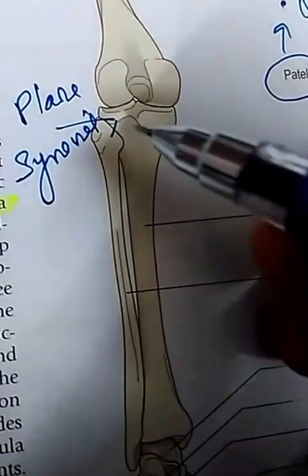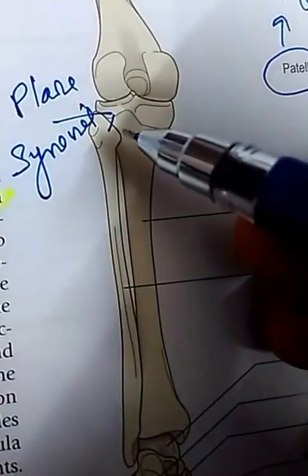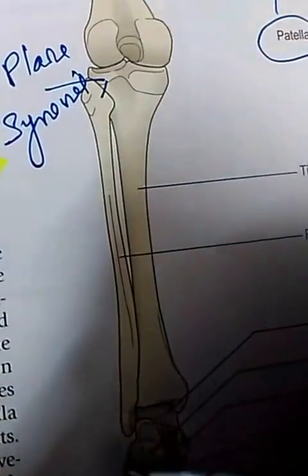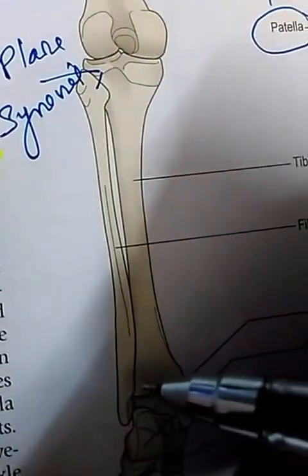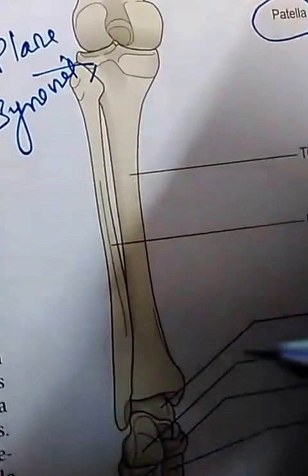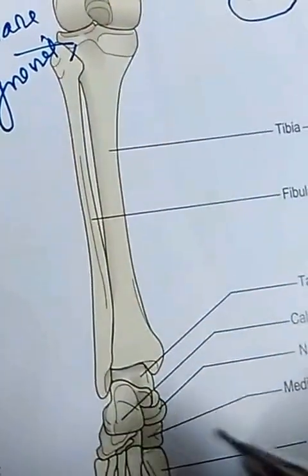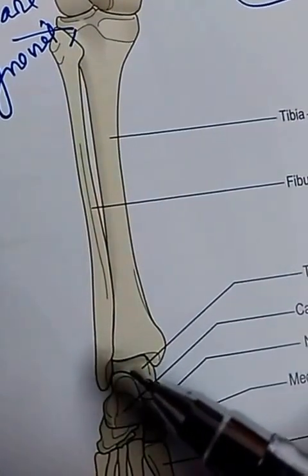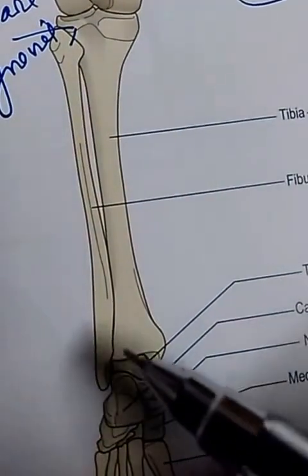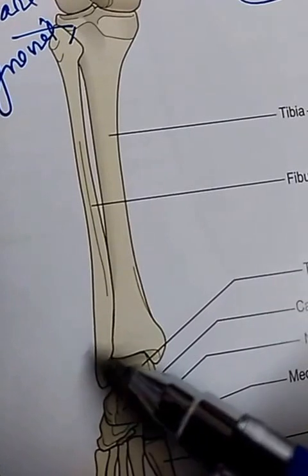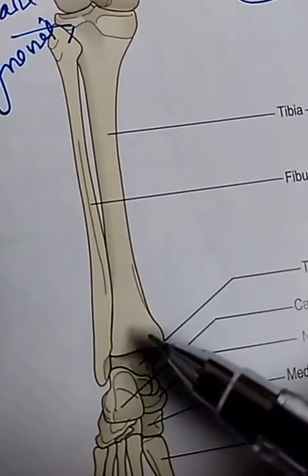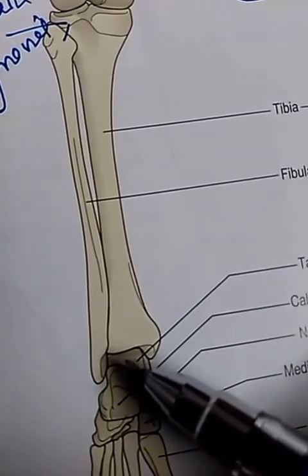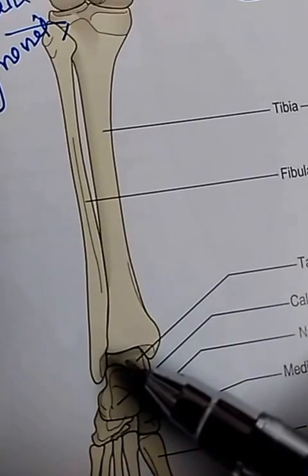The superior tibiofibular joint is a plain synovial joint, whereas the inferior tibiofibular joint is a fibrous joint. Now for the ankle joint — this is the fibula, this is the tibia, and this is the talus.